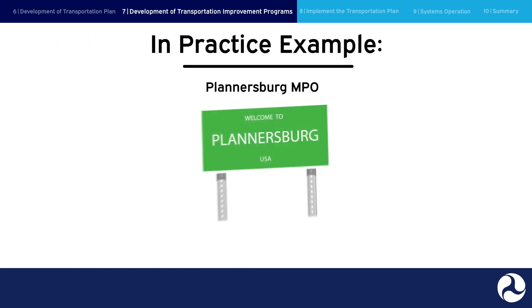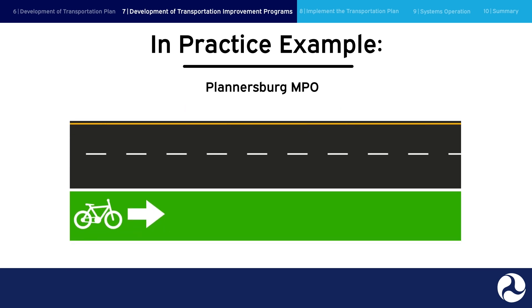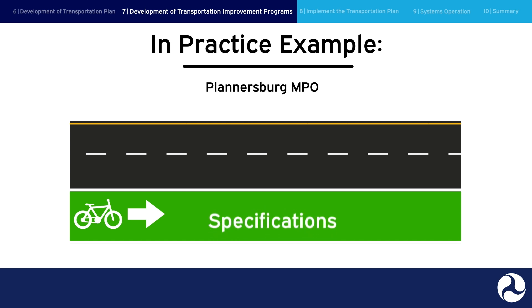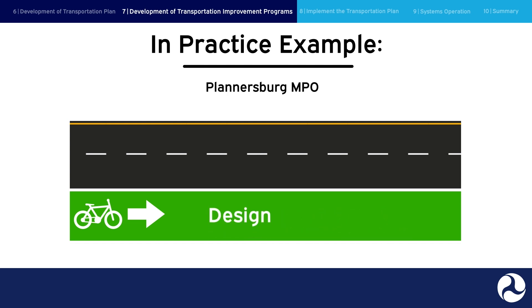In practice example: as part of the TIP development process, the Plannersburg Public Works Department submits a proposal to implement one of the plan recommendations located in their city. They develop a bike lane project proposal for consideration in the TIP that includes detailed information, locations, specifications, budgets, funding sources, timelines, and cost estimates for environmental review, design, and construction.